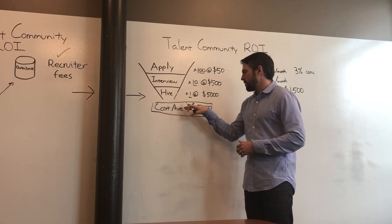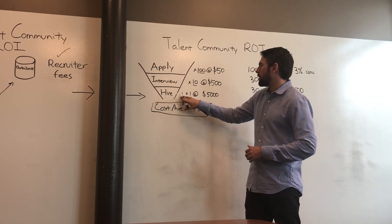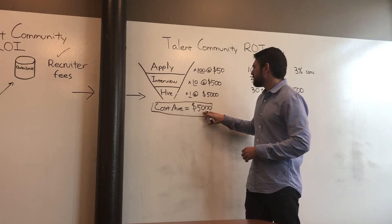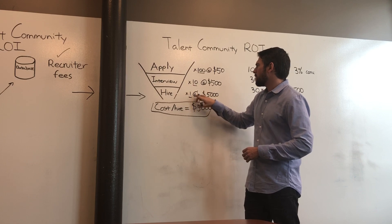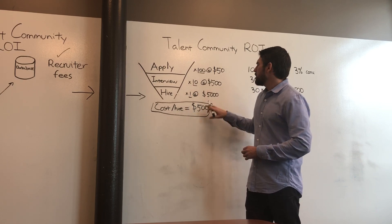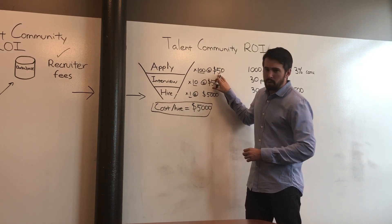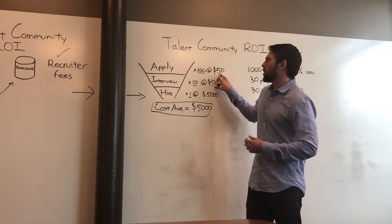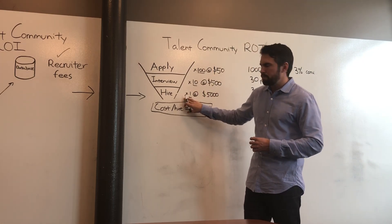Let's translate this into dollars. $5,000 per hire — so each hire is worth $5,000 to me. And 10 interviews get me a hire, so each interview is worth $500 to me. Using the same logic, each application is worth $50 to me. Theoretically, I should be willing to pay $50 per applicant, because I know when I get 100 of those, it's going to translate into a hire.